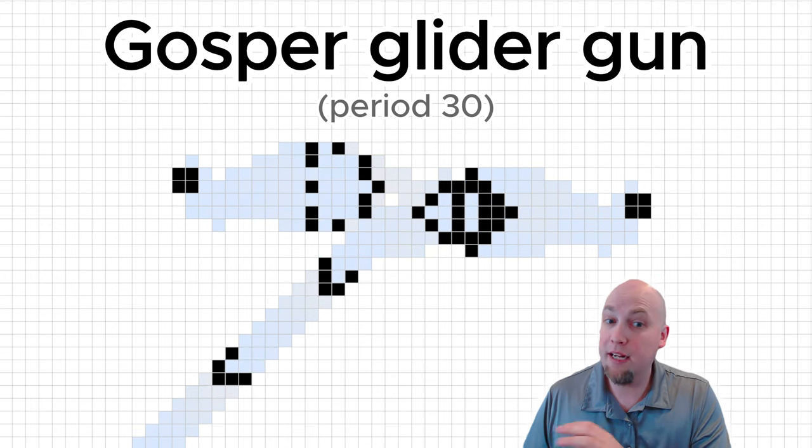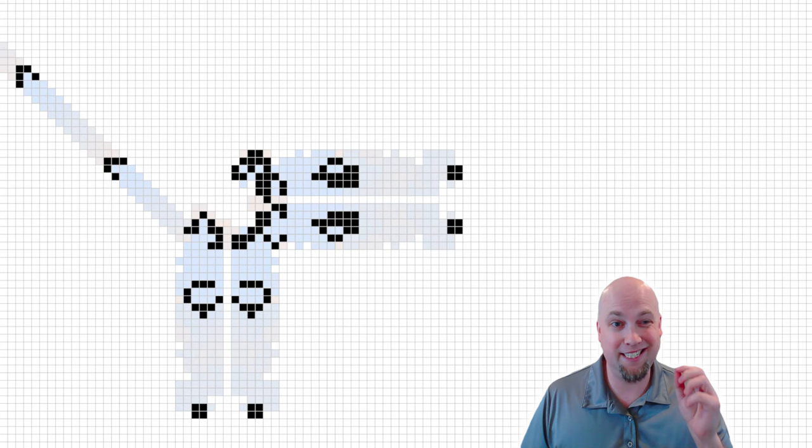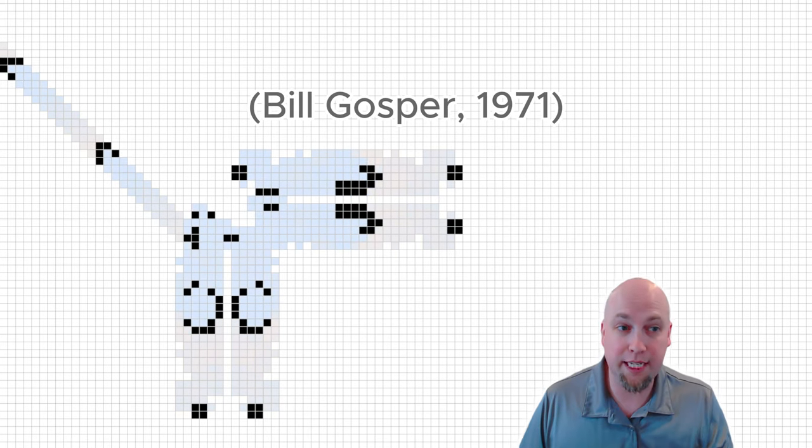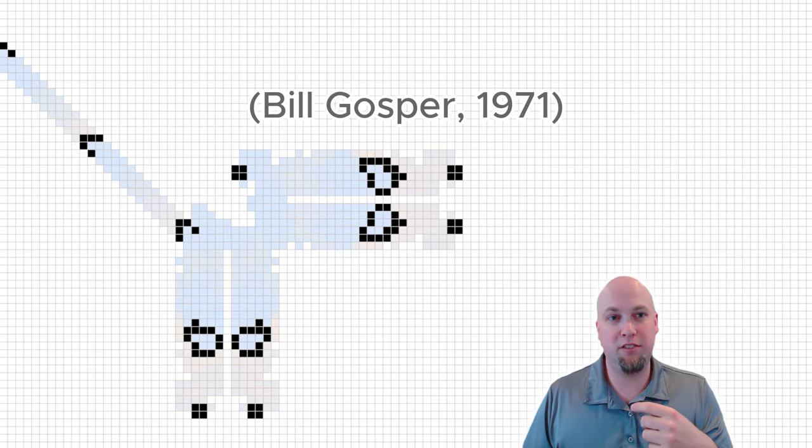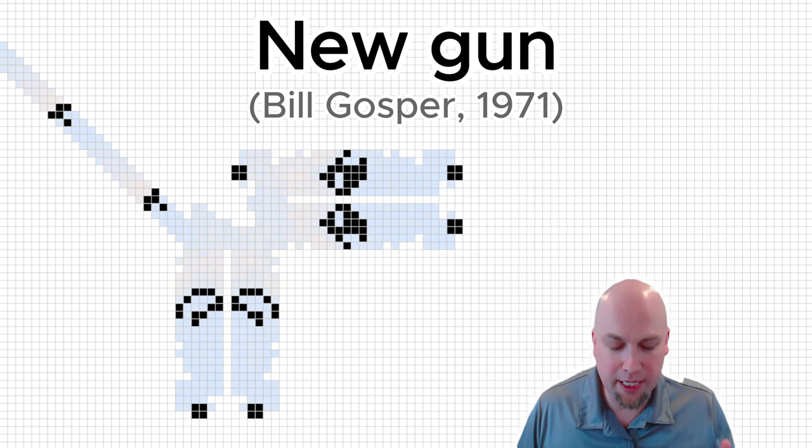There are lots of other glider guns out there as well. Also found by Bill Gosper in 1971, just about a year later, was this gun here, which, now this name's a little bit inaccurate, but it's called the new gun. At the time, it was the new gun.